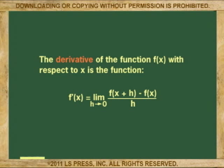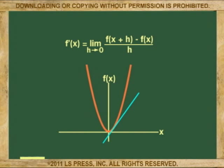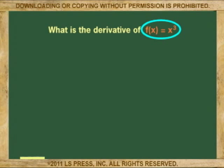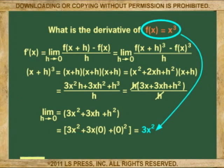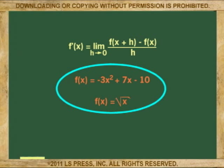This is the continuation of the derivative. In part one, the derivative used in differential calculus was explained using the slope of a tangent and limits. As a way of an example, the derivative of the function x cubed was figured out and found. In this lesson, two or more examples will be worked out to further explain how the derivative is calculated.